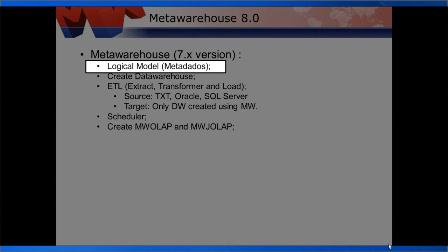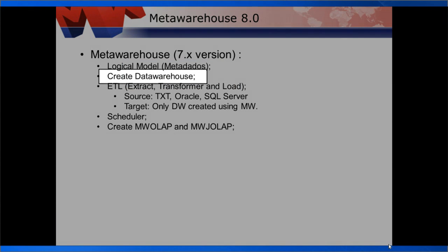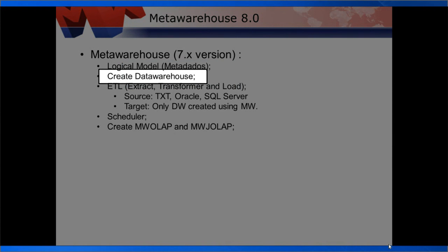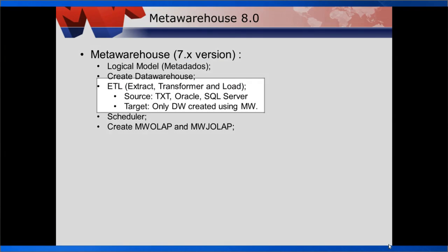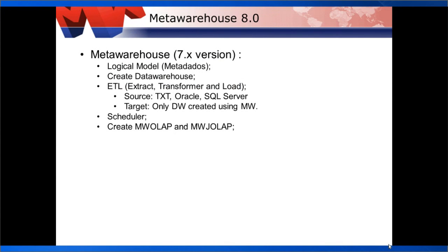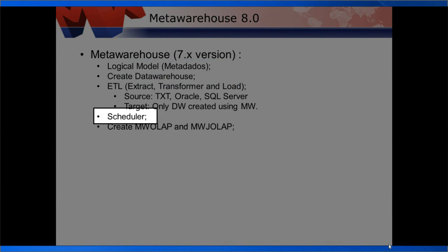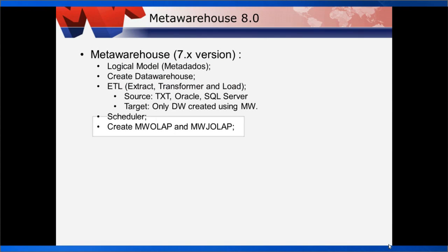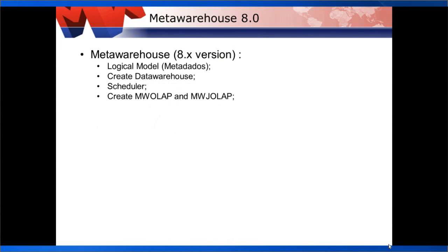In the current version, we use MetaWarehouse to create a logical model. Based on the logical model, we create the data warehouse. We program the process of extraction, transformation, and load, and set the implementation period process. We can also create OLAP databases. In the new solution, we use the server only to create the logical model, data warehouse, schedule processes, and creation of OLAP databases.